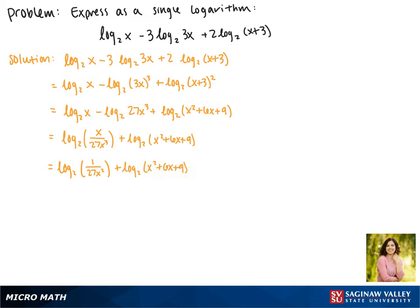Now we can combine these two terms. Since they're logarithms with the same base being added, the insides get multiplied. So this becomes the log base 2 of (x squared plus 6x plus 9) all over 27x squared. This is as simplified as we can make it, so this is our final answer.